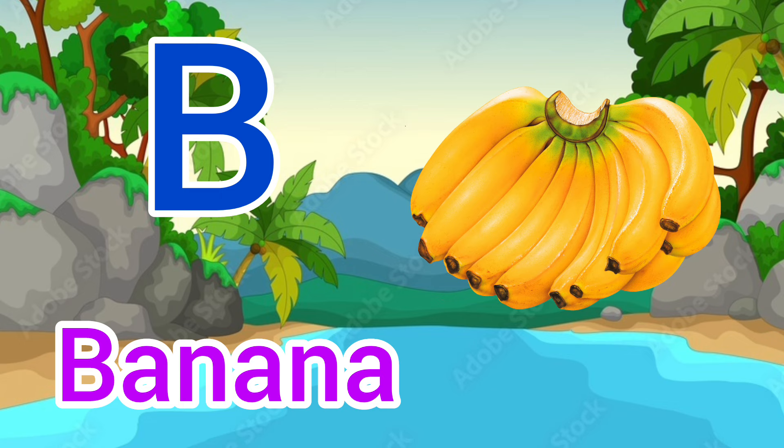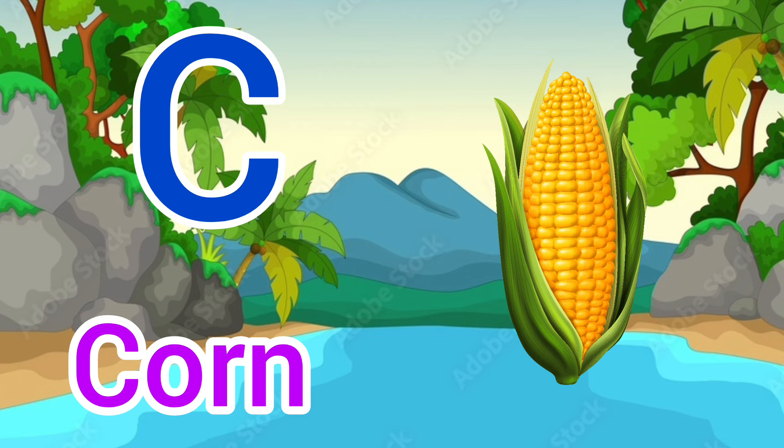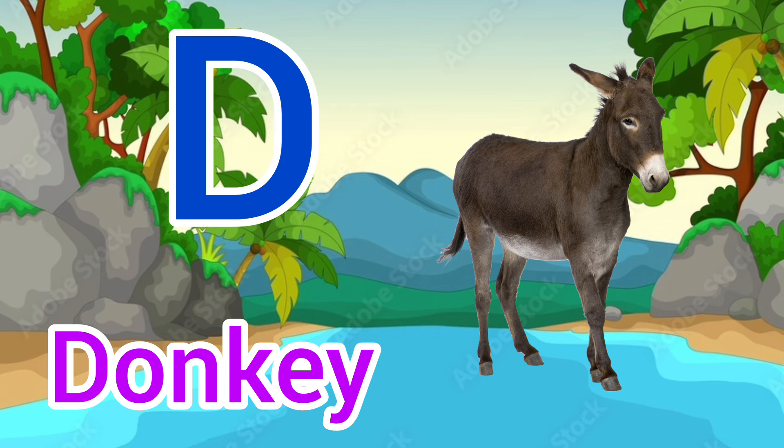C for corn, corn means makka. D for donkey, donkey means gada.